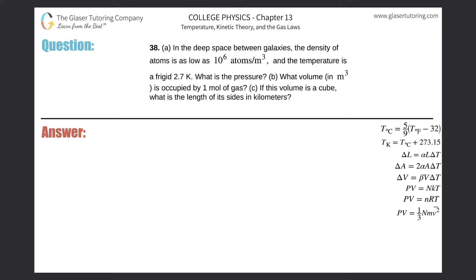Number 38, letter A. In the deep space between galaxies, the density of atoms is as low as 10 to the 6 atoms per cubic meter and the temperature is a frigid 2.7 Kelvin. What is the pressure? Alright.